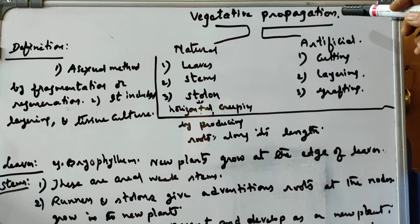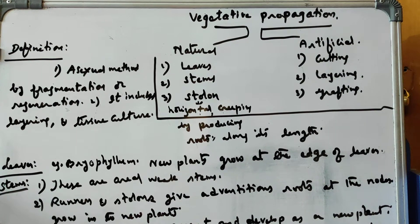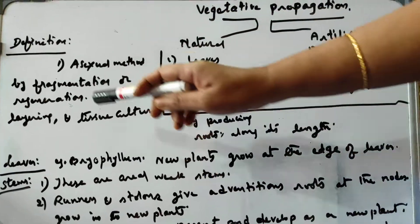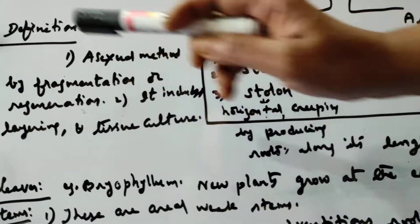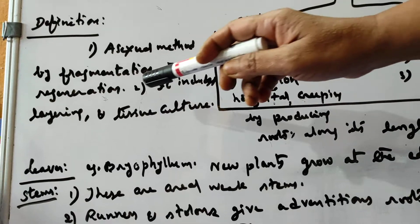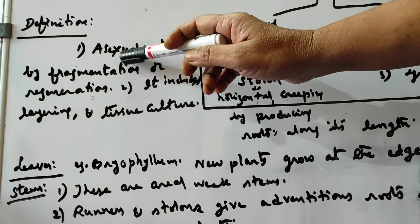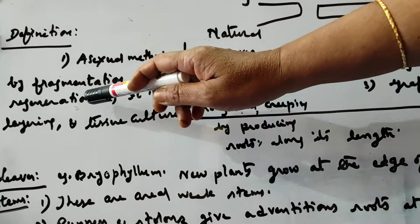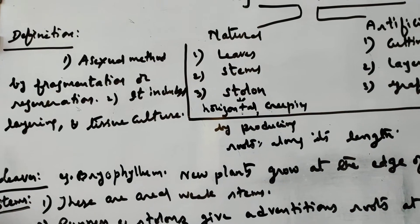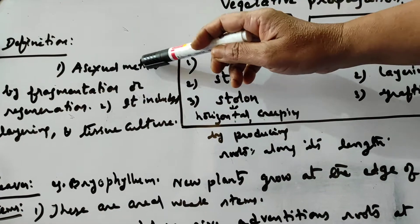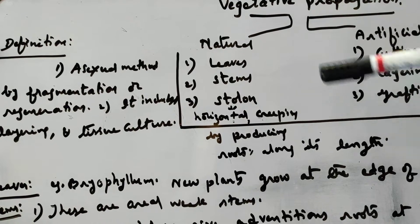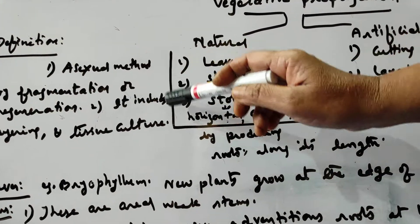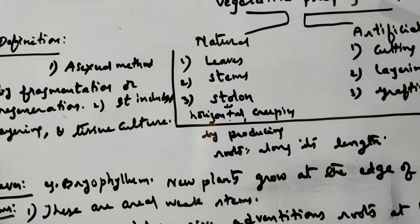This is vegetative propagation for 10th class biology, which is a form of asexual reproduction. It involves fragmentation and regeneration, which were discussed in the previous video. Now we are looking at vegetative propagation in plants, which includes layering and tissue culture.